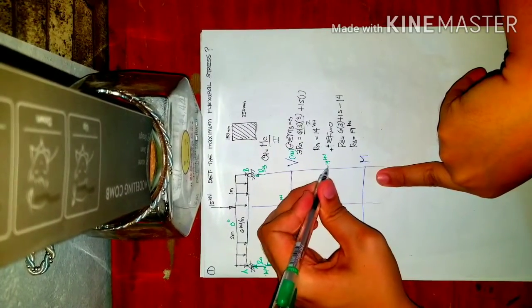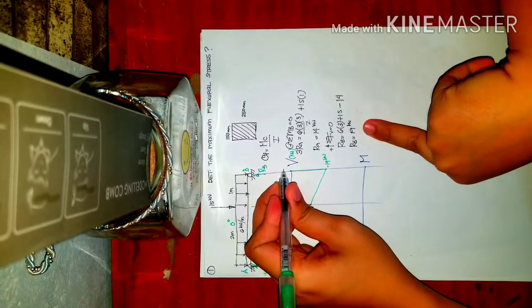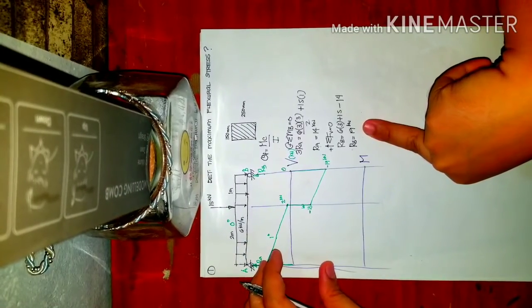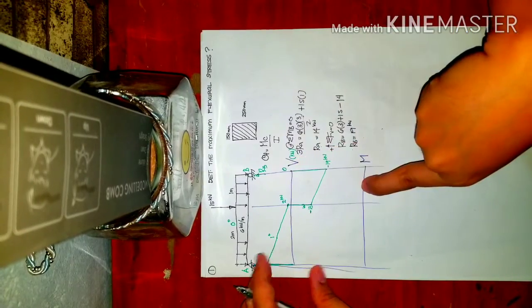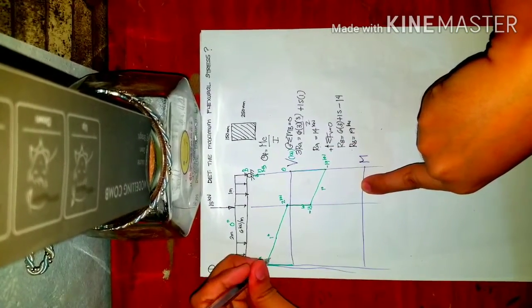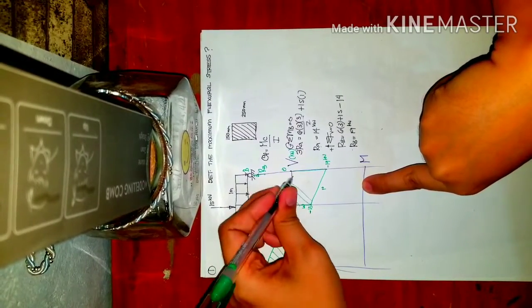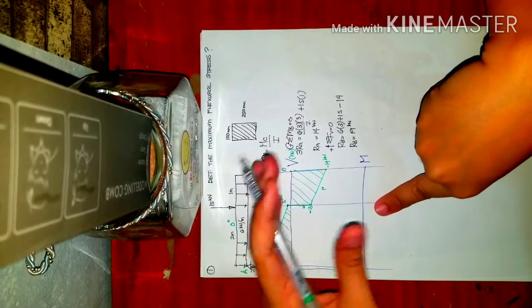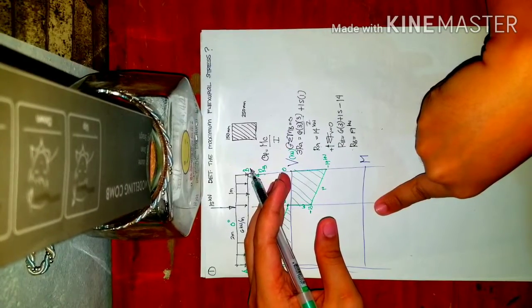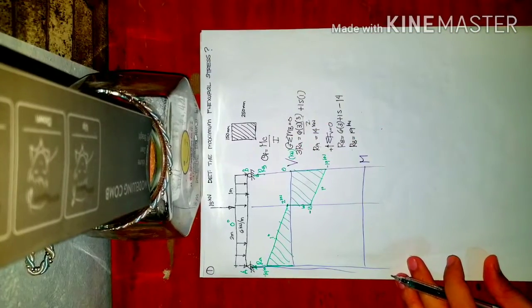At point B, the reaction is 19 kN upward, bringing the shear back to zero. This serves as a check — the shear must close to zero at the far support. We now have our complete shear diagram. Note that this shear diagram will also be needed later for horizontal shearing stress calculations.